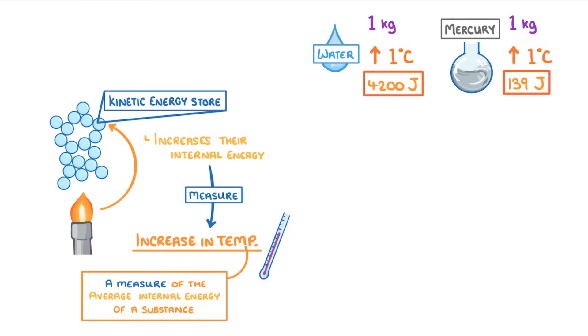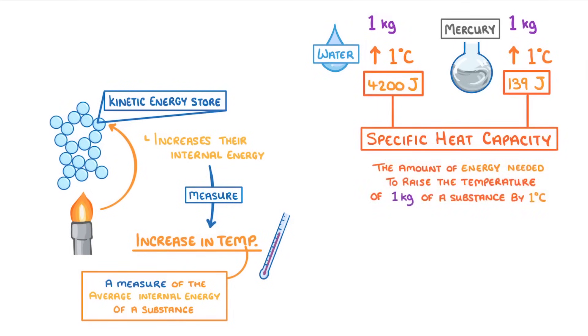We call these numbers the specific heat capacity, which is the amount of energy needed to raise the temperature of 1 kilo of a substance by 1 degree Celsius.